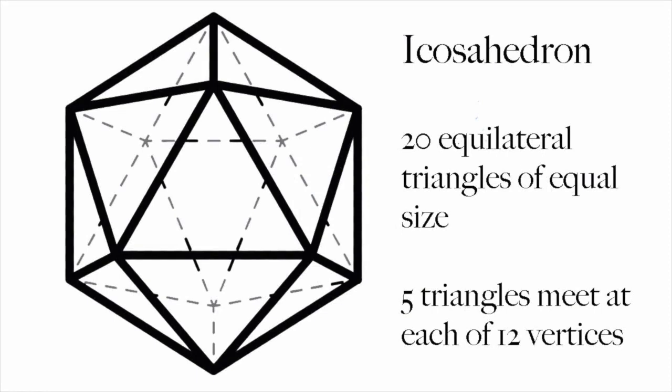First of all, what is a Platonic solid? It's a regular convex polyhedron. So what does that mean? Well, a polyhedron is a three-dimensional shape with flat sides.